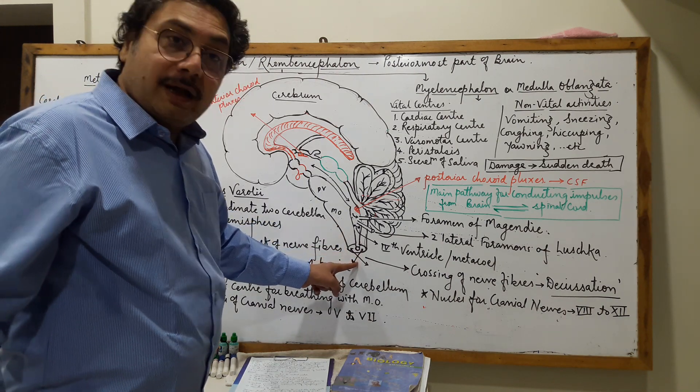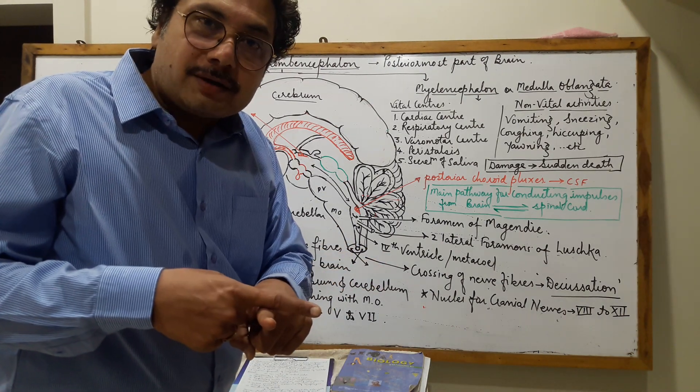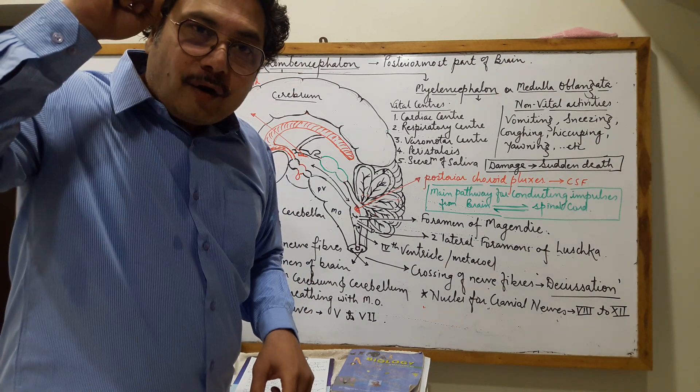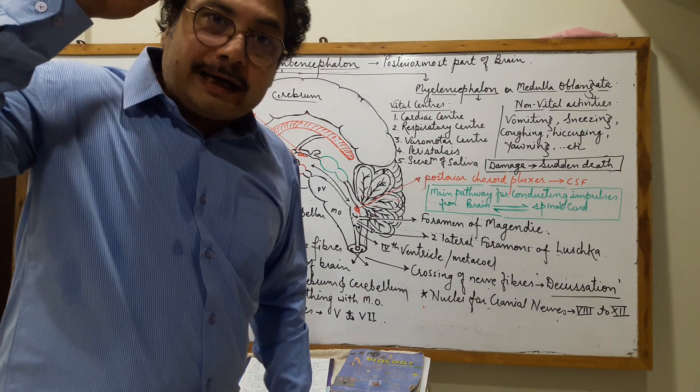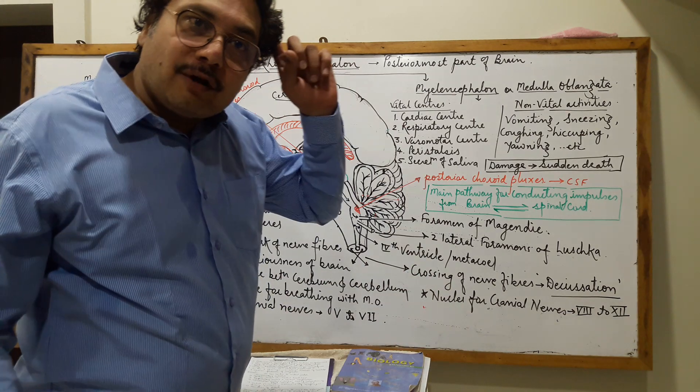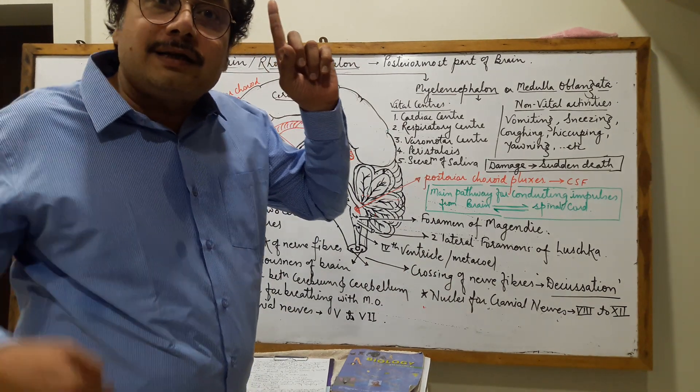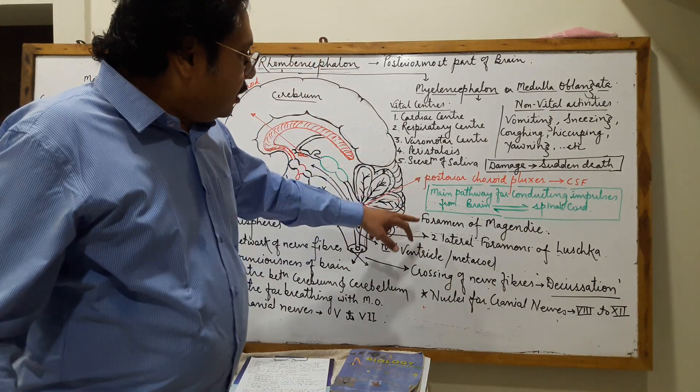Because there is a crossing of nerve fibers, the right side of the brain controls the activities of the left side of the body, and the left side of the brain controls the activity of the right side of the body.